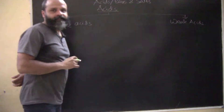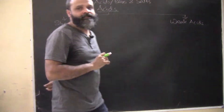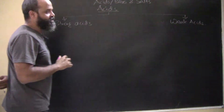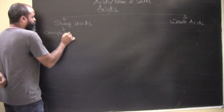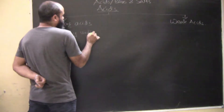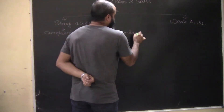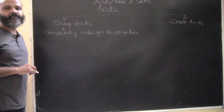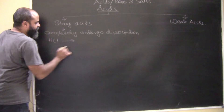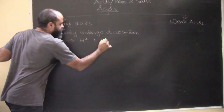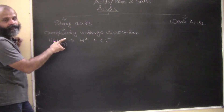Strong acids are the ones which completely dissociate to form H⁺ ions. Strong acids completely undergo dissociation. For example, if we take hydrochloric acid (HCl), in aqueous medium - that is, in water - it completely dissociates to form H⁺ plus Cl⁻.